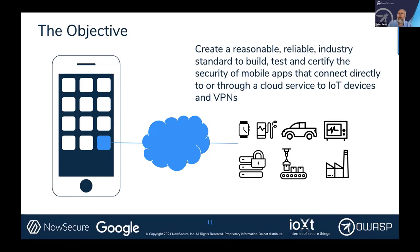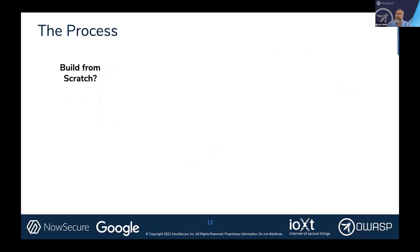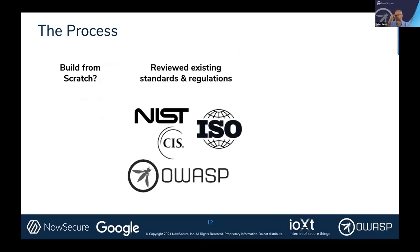The first brainstorming sessions asked: should we build this from scratch? Most of the time we tend to start there — put ideas on the board, think about semantics, where's the edge of the envelope. After a meeting or two, that moved into: maybe it'd be better to start with existing standards or regulations. We looked at ISO in Europe, we looked at CIS, and here in the States we looked at NIST and OWASP. There were pros and cons for leveraging each regime.